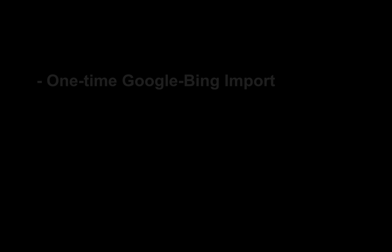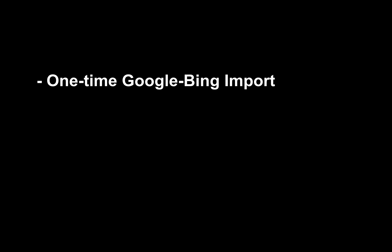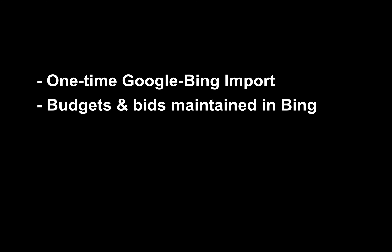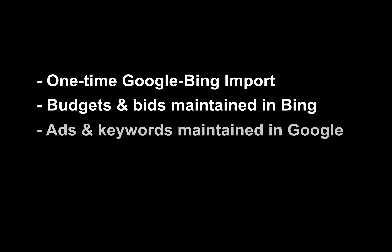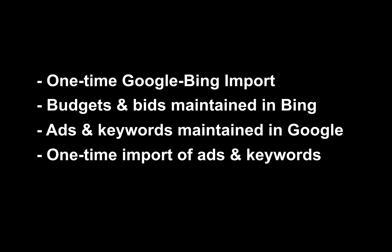There are four steps in this method. Start by importing everything from your Google Ads to Bing just once. Tweak budgets and bids on Bing. Optimize your ads and keywords on Google Ads. Finally, import your updated ads and keywords from Google over to Bing — again, just once.